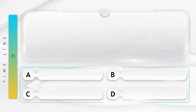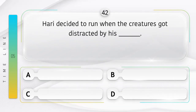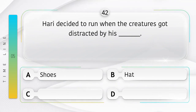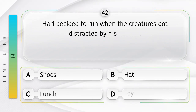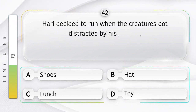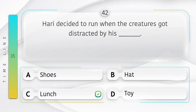Angry. Hari decided to run when the creatures got distracted by his ______. Option is A. Shoes. B. Hat. C. Lunch. D. Toy. Answer is option C.